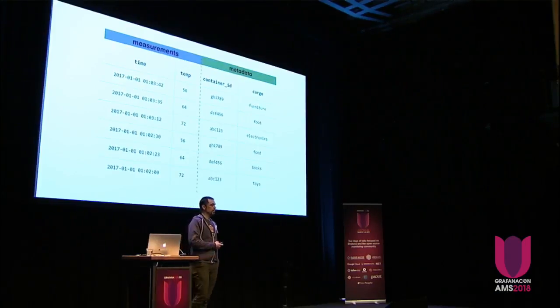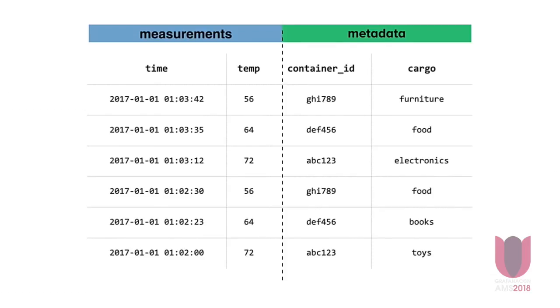If you have data coming in from various sources, you might have some metadata as well — for example, a container ID that identifies the particular container, and maybe some metadata about the cargo within. This is a very typical data model that we see in many systems. Like Prometheus, this is pretty much the exact model. Influx is doing something similar.